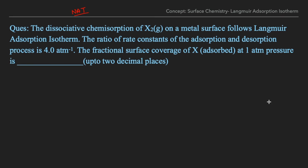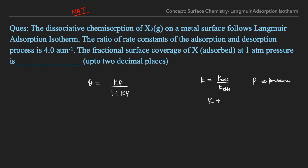Now, if you have studied the Langmuir adsorption isotherm, you know that surface coverage θ is calculated as: θ = kP / (1 + kP), where k is the ratio of the rate constant for adsorption to the rate constant for desorption (k_adsorption / k_desorption), and P is the pressure. Both values are given: k = 4 atm⁻¹ and P = 1 atm.